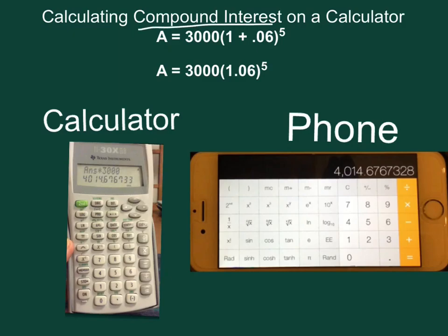You can calculate compound interest on a calculator or a phone. The trick is to make sure that you do your exponent first. So you want to do 1.06 to the fifth power and then multiply by 3,000.